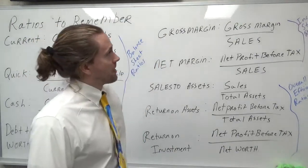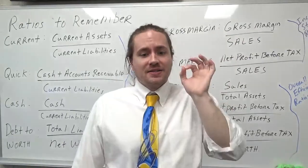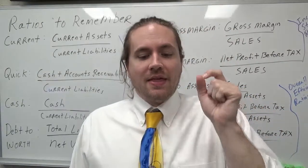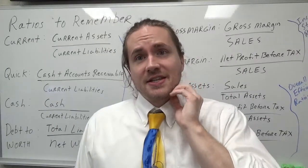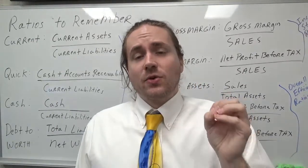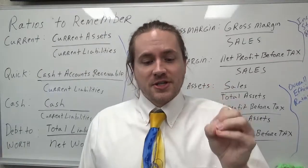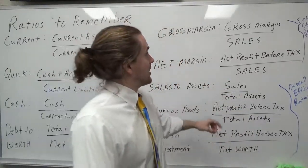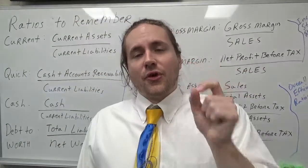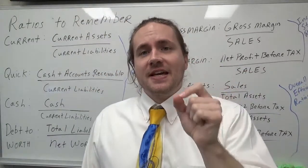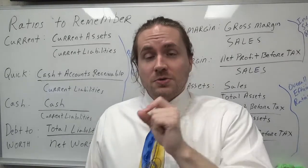The first is gross margin, which is where you take the gross margin and divide it by sales. This measures profitability at the gross margin level. For example, a gross margin ratio of 50% means that for every dollar of sales, the firm produces a 50-cent gross margin.